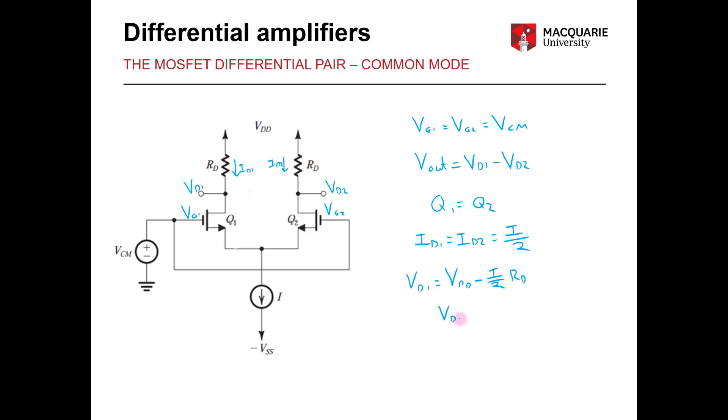So therefore VD1 is equal to VD2 which gives us our answer for a differential output Vout. If VD1 equals VD2 then Vout must equal 0.